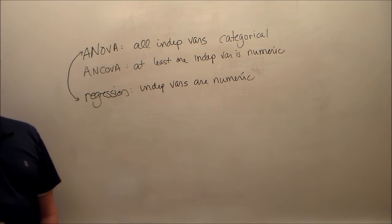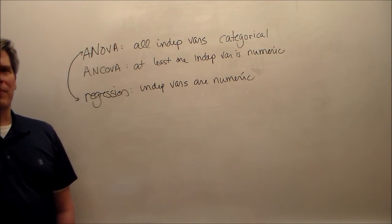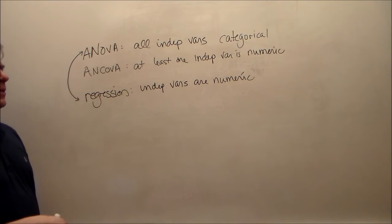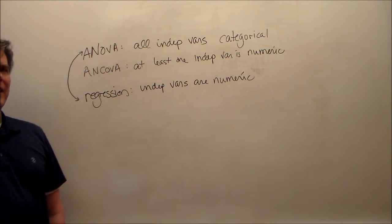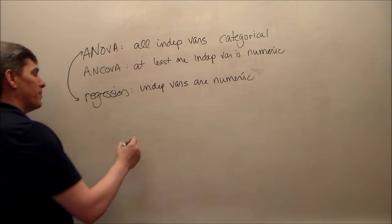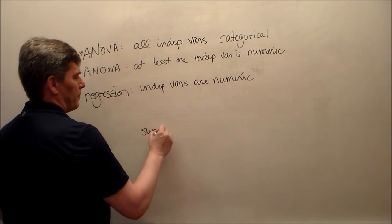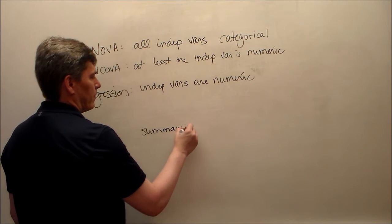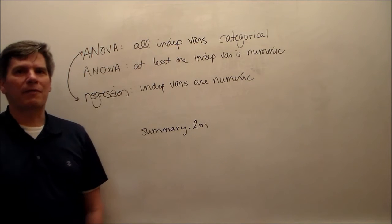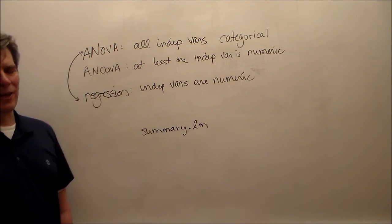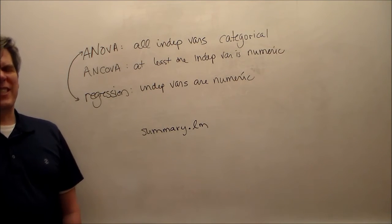It's because analysis of variance and regression, and therefore ANCOVA, all do the same thing. The only difference between the AOV function and the LM function is the summary. If you do a summary of an AOV, then you get the analysis of variance table. If you do a summary of an LM, then you get the regression table. But as you've been seeing recently, R people, you can use summary.lm to get a regression table off of using an AOV. Because it's the same thing.